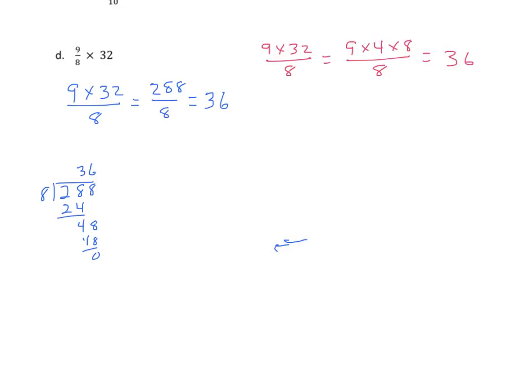And finally, showing you the last method using the shorthand, which is very commonly used as you get into upper grades working with algebra. Again, both 32 and 8 are divisible by 8. We get a 1. We get a 4. 4 times 9 is 36.